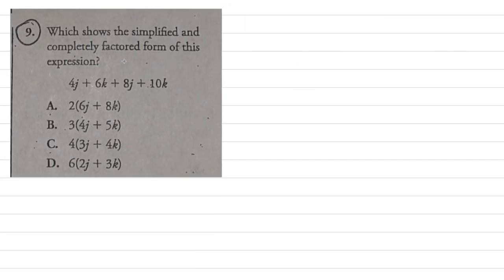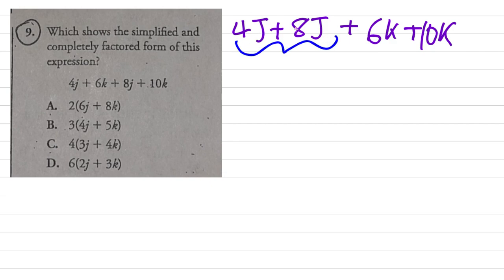All we have to do is group things together. Looks like we have 4j plus 8j - I'm just basically isolating the j's. And then the k's are going to be together, so that's 6k plus 10k. Now since they're both j's, it's going to be 4 plus 8, so that's 12j. And then 6 plus 10, that's going to be 16k.